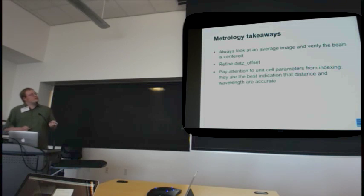So one of my takeaways on this metrology section, in addition to what Nick already described, always look at your average image and verify your beam center is right. Refine your detector Z offset to get the best number of indexed images. And most important is pay real close attention to the unit cell parameters that you're getting from indexing because they are the best indication that your distance and your wavelength are accurate. This does, of course, assume that you know your unit cell parameters, but usually you've been using a calibration sample first that you do know a lot about, so you can use this technique.